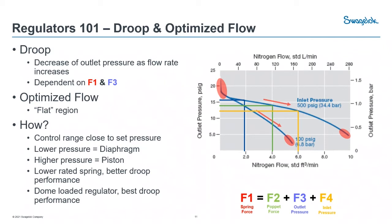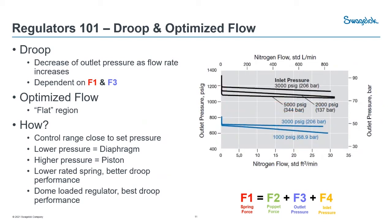How do we actually get into that flat range? When selecting a regulator, you really want to pick one that has a control range close to your set pressure. For lower pressures, use a diaphragm sensor instead of a piston. For higher pressures, use a piston sensing regulator. A lower rated spring will provide better droop performance, but dome-loaded regulators give the best droop performance — as you can see in this flow curve example, the lines are quite flat. This is what you'll tend to see a lot in the RHPS series, which also utilizes much larger pressures.